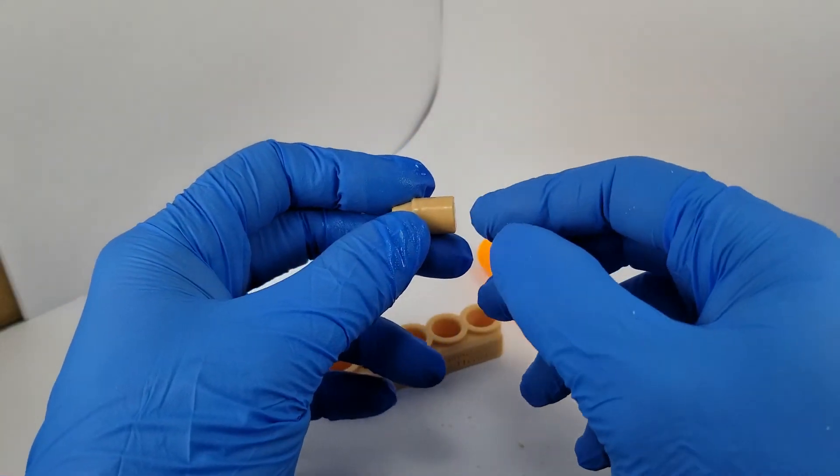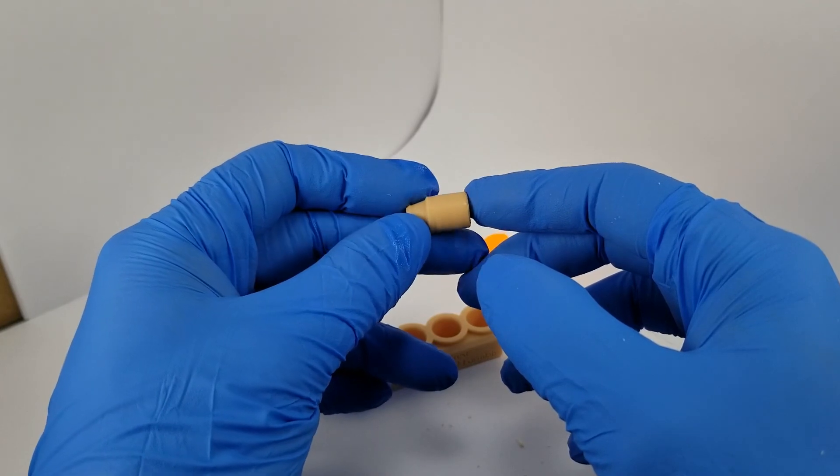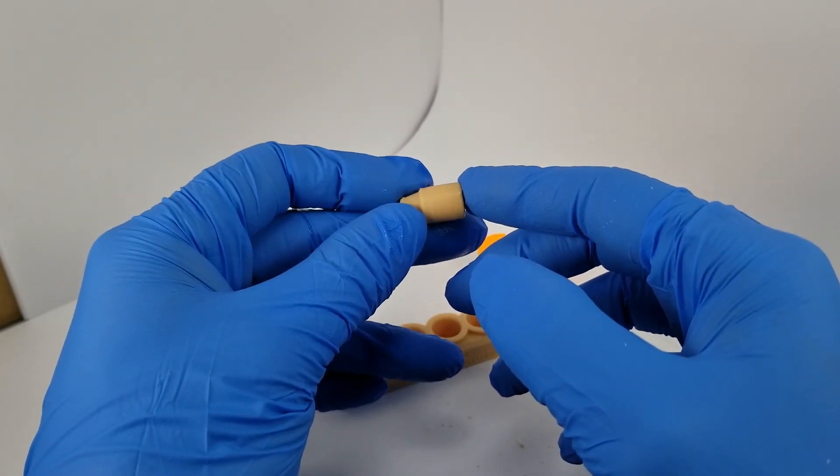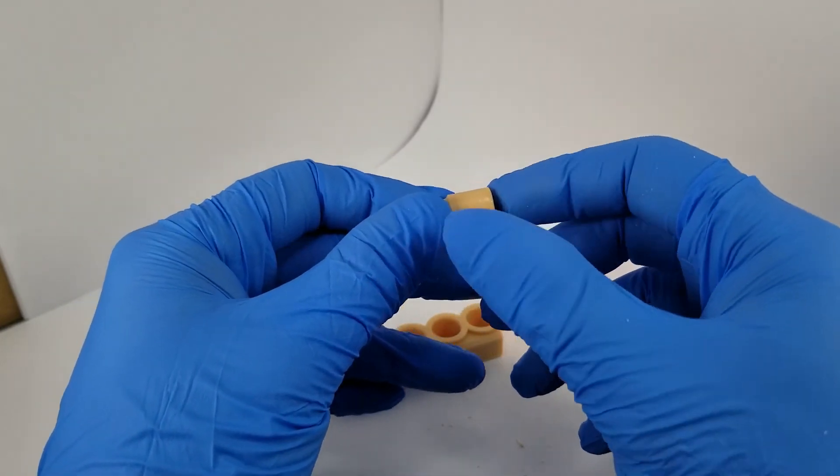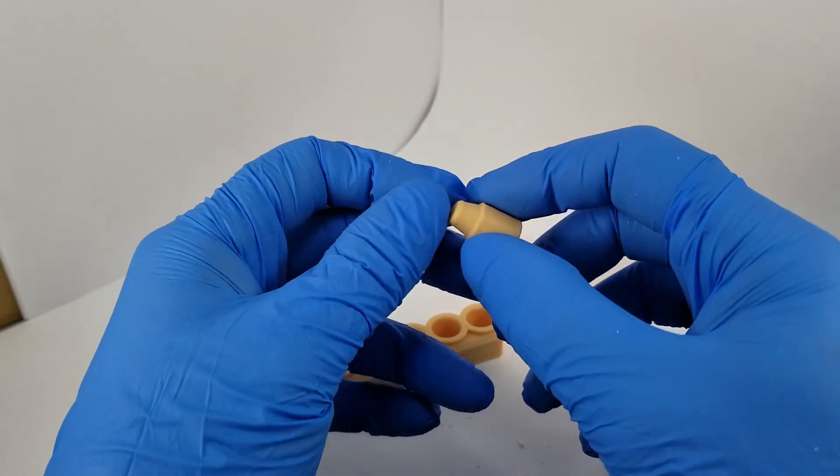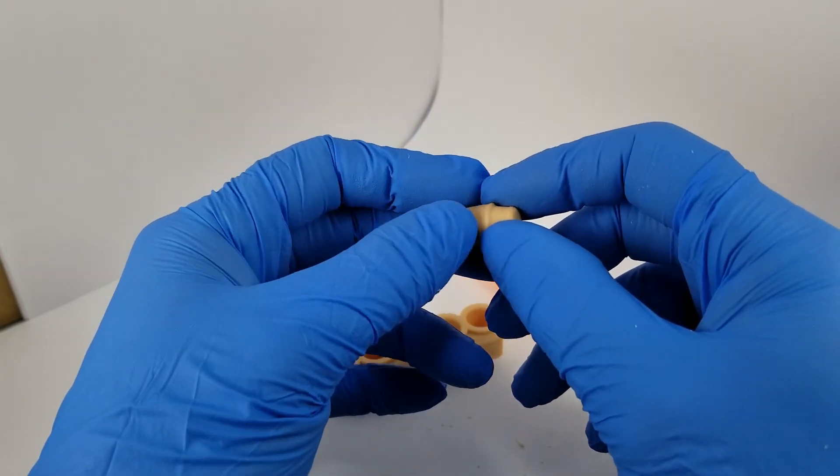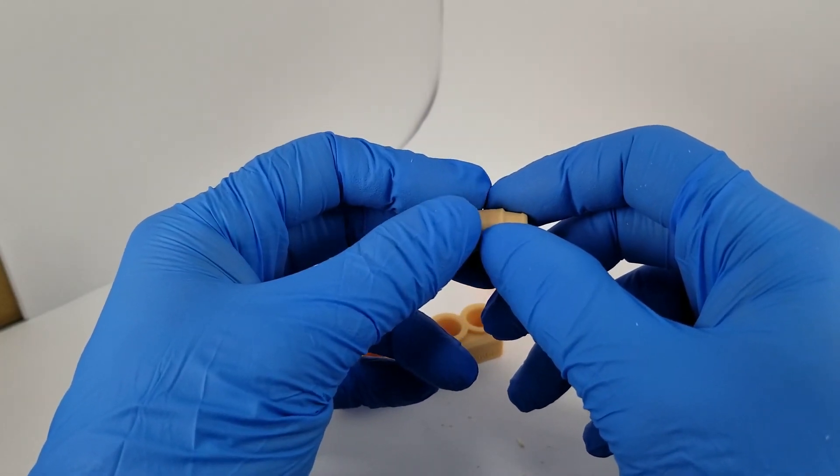It dries completely clear very quickly. You can use some compressed air to make this process a little bit quicker, but it is air drying rapidly as we speak. And now it's got a thin, invisible coat of Teflon, actually. It's the brand name for it. It's PTFE.